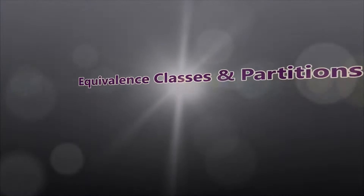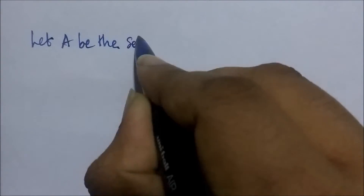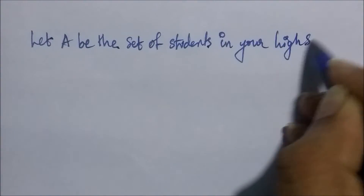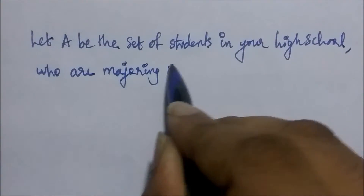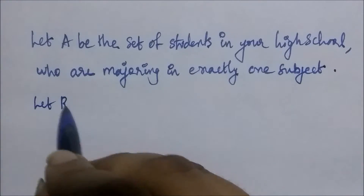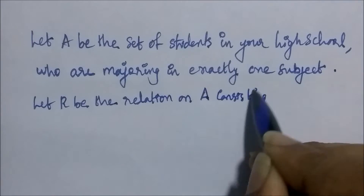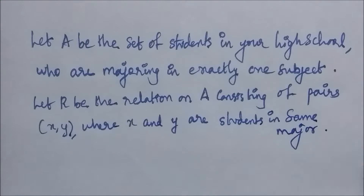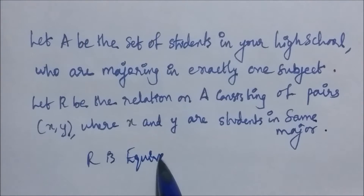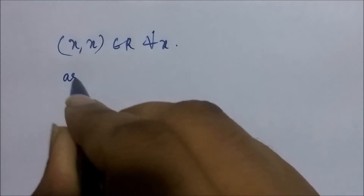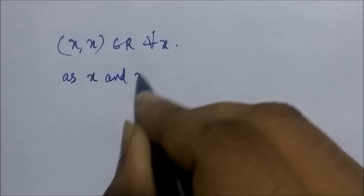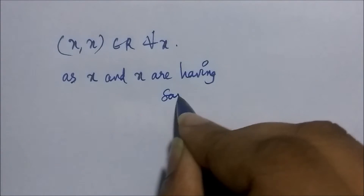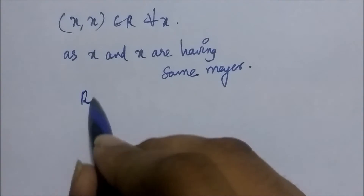Let's get to the subject of equivalence classes and partitions with an example. Let A be the set of students in your high school who are specializing in exactly one subject. Let R be the relation on set A consisting of ordered pairs x, y where x and y are students in the same major. So x and y have the same specialization. Now x, x belongs to R for all x because x and x are the same student with the same specialization, so the relation is reflexive.